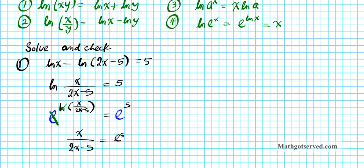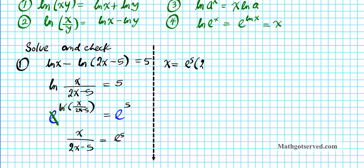Next, we're going to cross multiply — multiply both sides by 2x minus 5. So we'll have x equals e to the fifth times 2x minus 5. Distributing e to the fifth to the two terms gives us x equals 2x times e to the fifth minus 5e to the fifth.